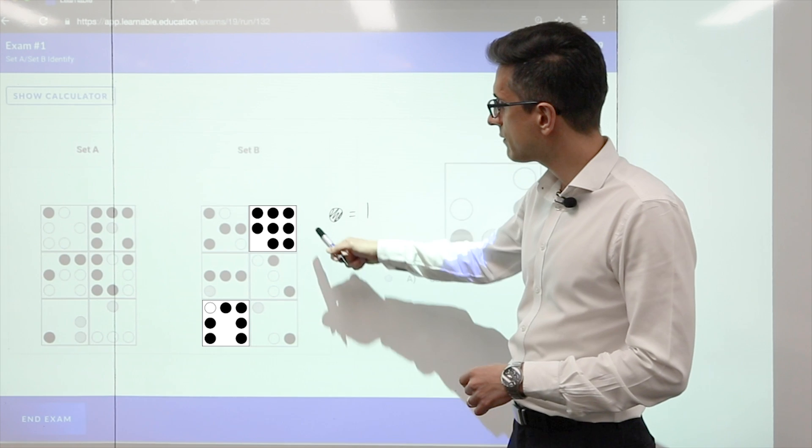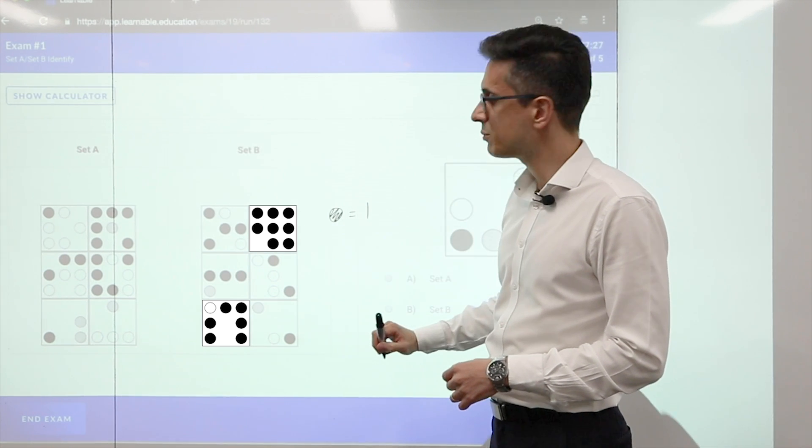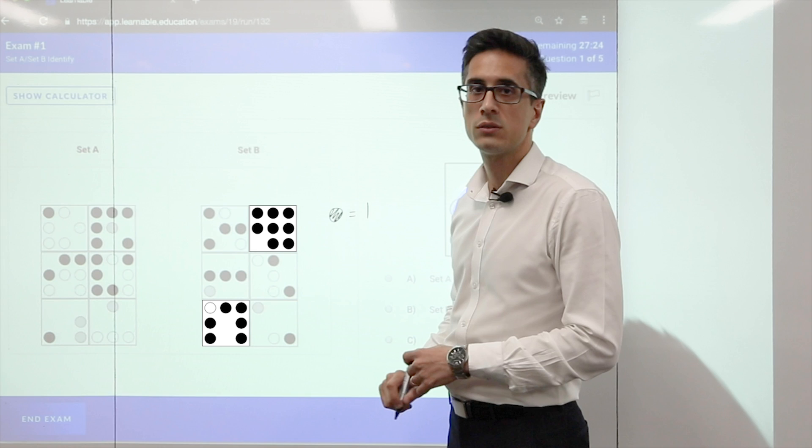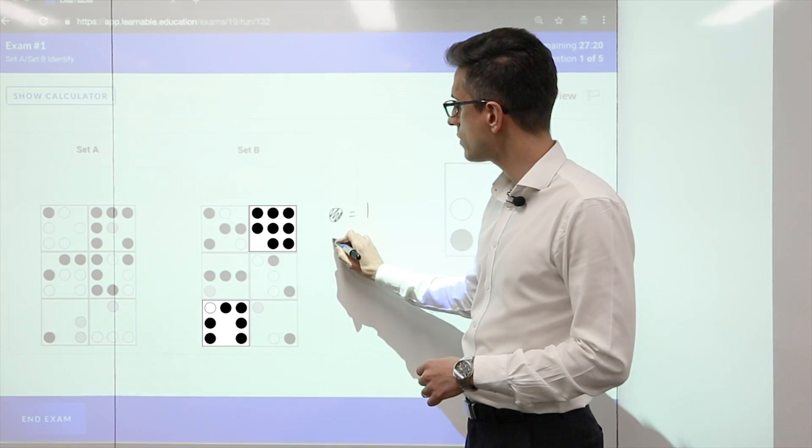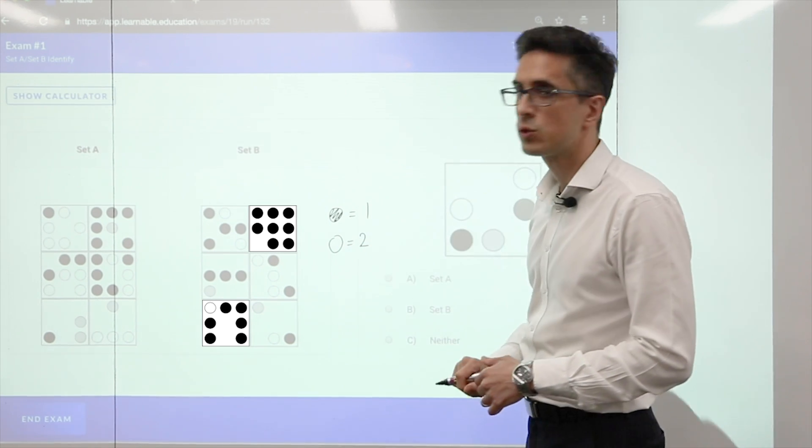So if I compare the two, I have 8 black circles in the top right, and I have 6 black circles and a white circle in the bottom left. Which indicates that if a black circle is 1, the white circle must equal 2.